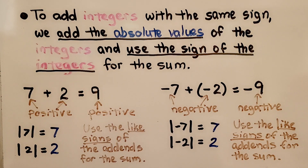To add integers with the same sign, we add the absolute values of the integers and use the sign of the integers for the sum.